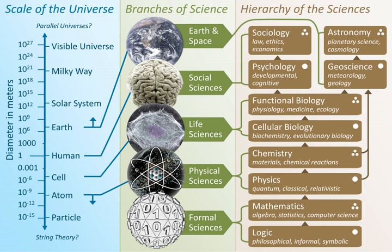Physical science is an encompassing term for the branches of natural science and science that study non-living systems, in contrast to the life sciences. However, the term 'Physical' creates an unintended, somewhat arbitrary distinction, since many branches of physical science also study biological phenomena.